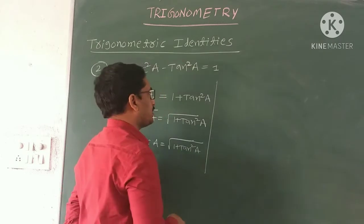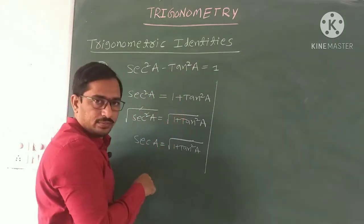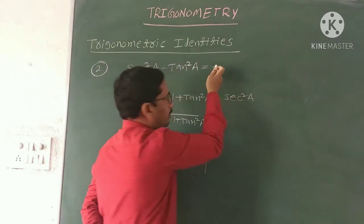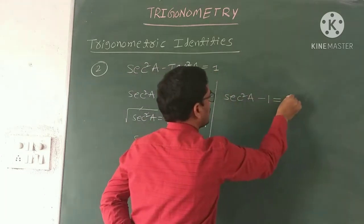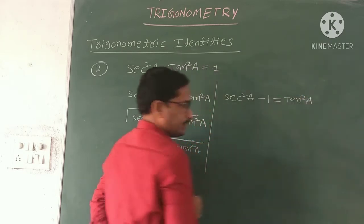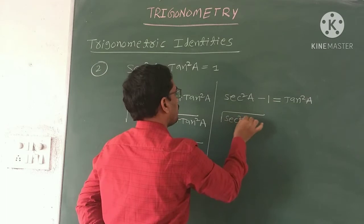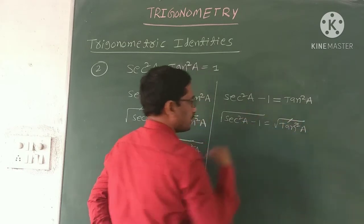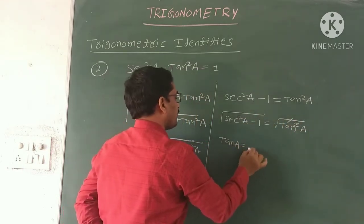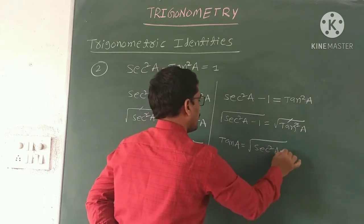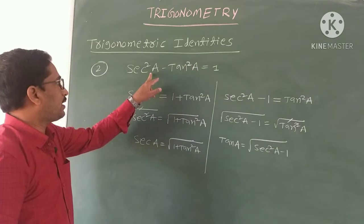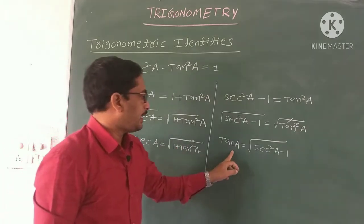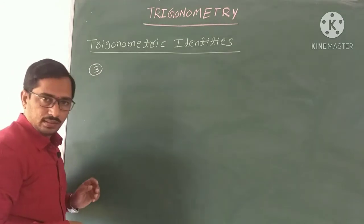Now express tan in terms of sec. Transposing 1 to the left side: sec²A - 1 = tan²A. Applying square root on both sides: tan A = √(sec²A - 1). So from the second identity sec²A - tan²A = 1, we get sec A = √(1 + tan²A) and tan A = √(sec²A - 1).